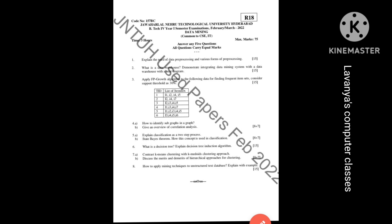The fourth question has two parts: A bit is how to identify subgraphs in a graph, and B bit is give an overview of correlation analysis. Both parts together come up to 15 marks.